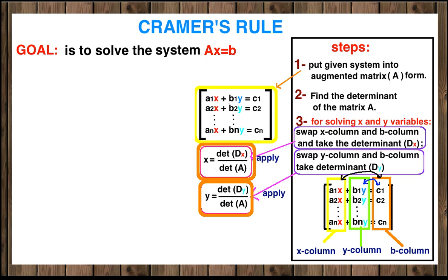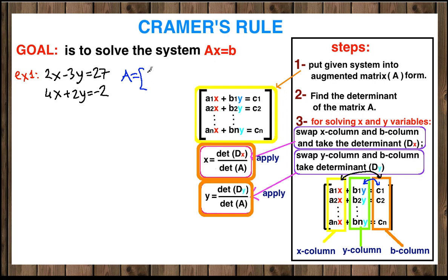Let's start with a 2x2 system. Our system is 2x minus 3y equals 27 and 4x plus 2y equals negative 2. Our first step is to put this system into augmented matrix form. Matrix A will have 2 and 4 for the coefficients of x, and negative 3 and 2 for the coefficients of y. Our variable column is x and y, equal to column B which is 27 and negative 2.